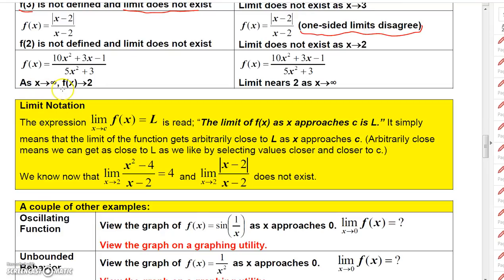In this last one, as x approached infinity, this function appeared to go to 2. So the limit gets closer and closer to 2 as x goes to infinity.